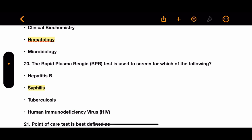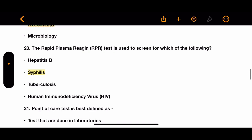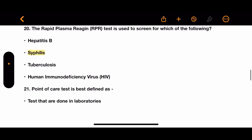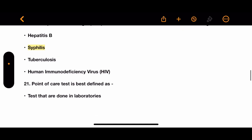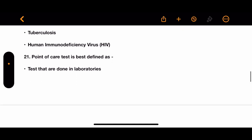Question 20: The rapid plasma reagin (RPR) test is used to screen for which of the following? Options: hepatitis B, syphilis, tuberculosis, and HIV. The correct answer is syphilis.